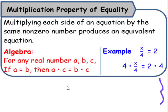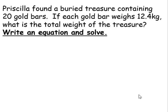Let's take a look at the multiplication property of equality, which states that multiplying each side of an equation by the same non-zero number produces an equivalent equation. Priscilla found a buried treasure containing 20 gold bars. If each gold bar weighs 12.4 kilograms, what is the total weight of the treasure? Write the equation to solve.